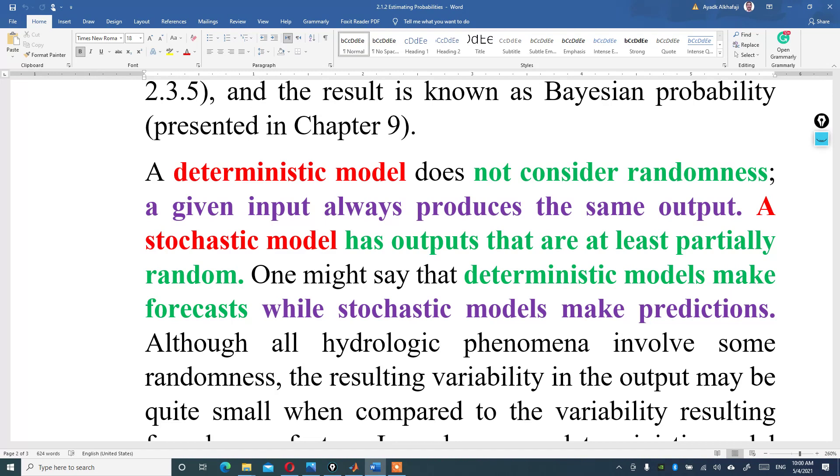بينما المصطلح الثاني يقول stochastic model، has outputs that are at least partially random. إذن stochastic model النتائج تكون على الأقل جزئيا من الrandom، بينما deterministic model ما يعتبر randomness، بينما الأقل واحد أو كل ها تكون randomness.